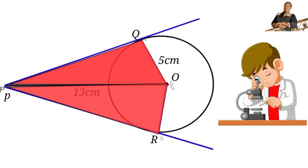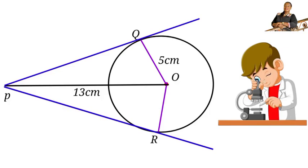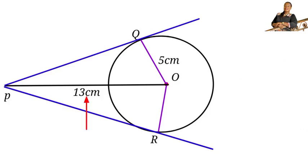Alright, now let us take a close look at this diagram. We have a triangle here and another triangle here. So we have two triangles and they share a common line which is 13 cm. The radius here is 5, that means this other radius will also be 5 cm.